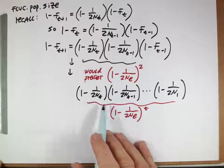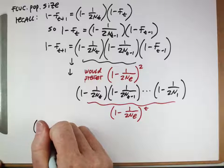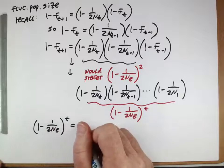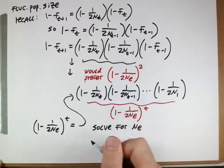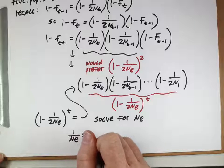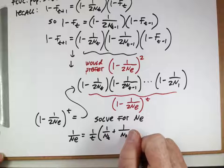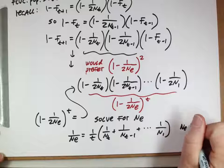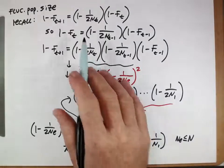Setting (1 − 1/2Ne)^T equal to that full product of terms and solving for Ne is where the fluctuating population size equation comes from. This is a conceptual derivation — the equation isn't arbitrary; it's just the original recurrence iterated over a large number of steps. Now let's look at a numerical example to see how to use this equation.